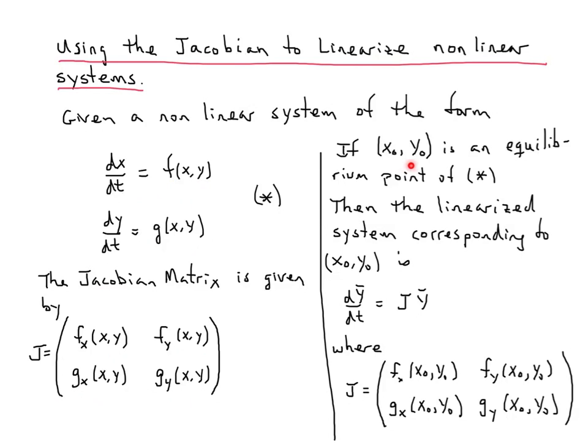If (x₀, y₀) is an equilibrium point of system (*), then the linearized system corresponding to that specific equilibrium point is given in matrix form because it's linear: dȳ/dt equals the Jacobian times ȳ.